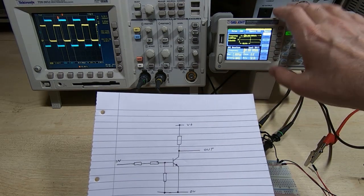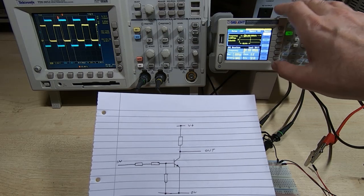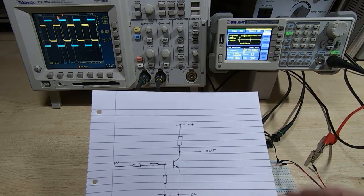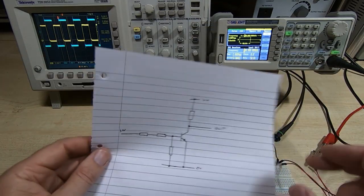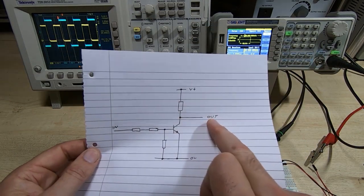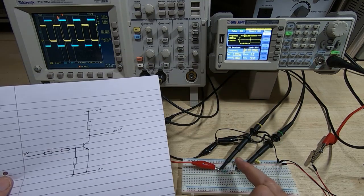The yellow trace on the scope is connected to the output, which is the collector of the transistor.